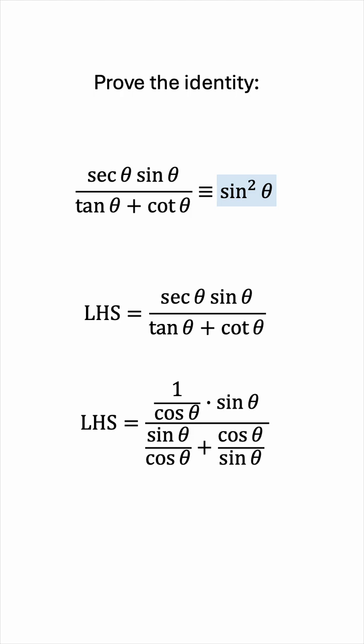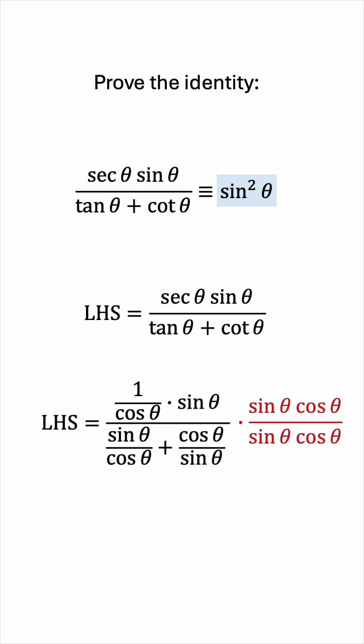Now let's clear all the denominators to make it simpler. To do so we'll multiply the top and bottom by sine cosine.